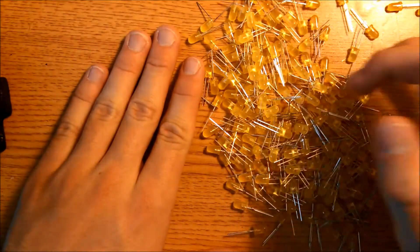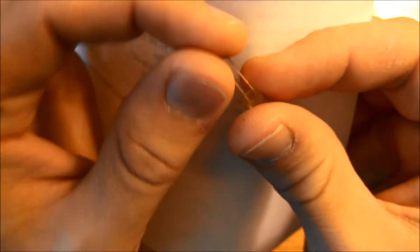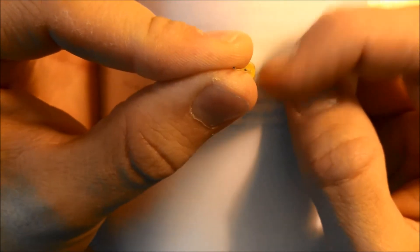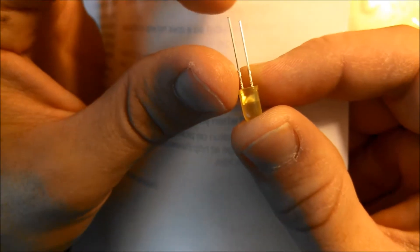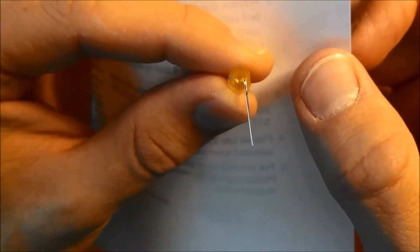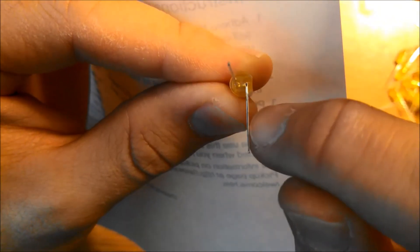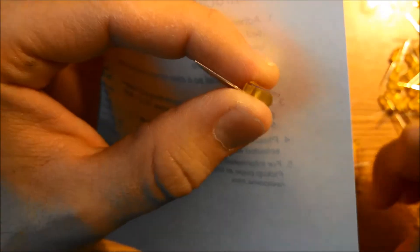We're going to start by bending all of these 300 LEDs. If you look at an LED, you'll notice there is a flat side and a non-flat side. There's also a short lead and a long lead. Take the short lead and bend it towards you, like so. The flat side corresponds with the short lead. You need to bend all of your 300 LEDs just like that.